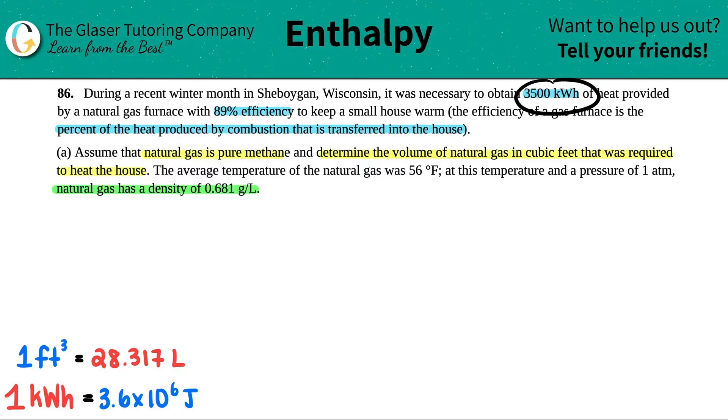First, let's convert kilowatt hours to joules. I don't like kilowatt hours - we've been using joules. I have 3,500 kilowatt hours, and for every one kilowatt hour there's 3.6 times 10 to the 6 joules. Using that conversion, kilowatt hours cancel, and 3,500 times 3.6 times 10 to the 6 gives us 1.26 times 10 to the 10th joules.